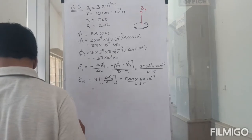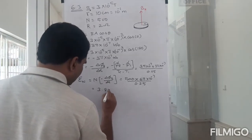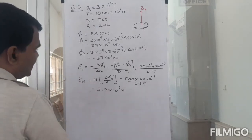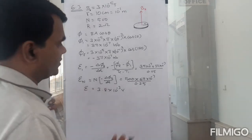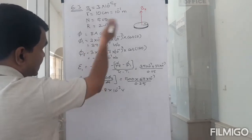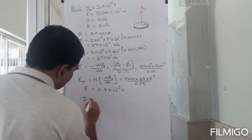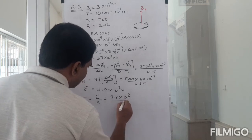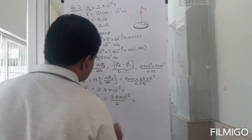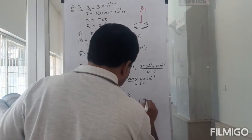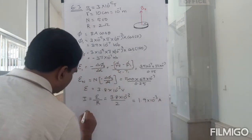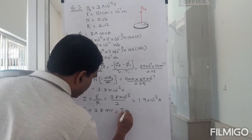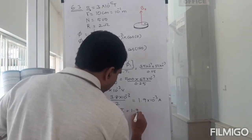That gives E = 3.8 × 10⁻³ volts, or 3.8 millivolts. The average current is EMF divided by resistance: I = 3.8 × 10⁻³ / 2 = 1.9 × 10⁻³ amperes, or 1.9 milliamperes. So the EMF induced is 3.8 millivolts and the current through the circuit is 1.9 milliamperes.